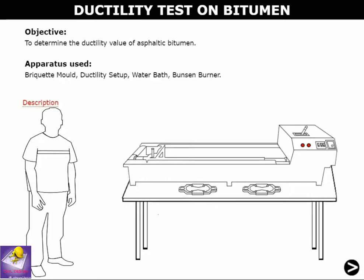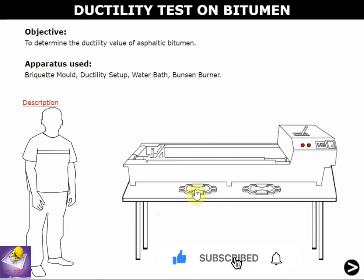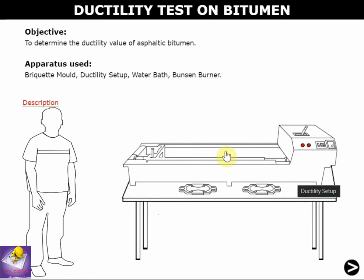Today we discuss the ductility test on bitumen — how we can calculate ductility on bitumen. This is the simulation part; the virtual lab is helping us to conduct this. The apparatus required are the brick weight mold, ductility setup, water bath, and Bunsen burner.